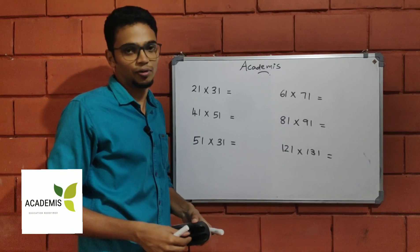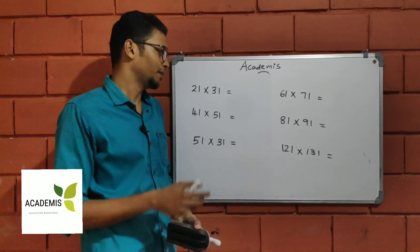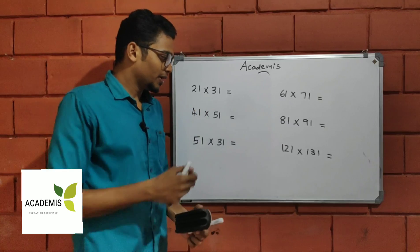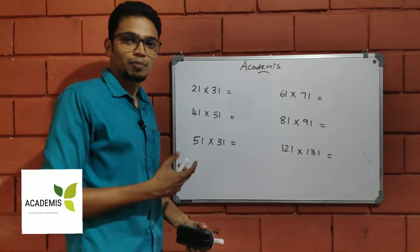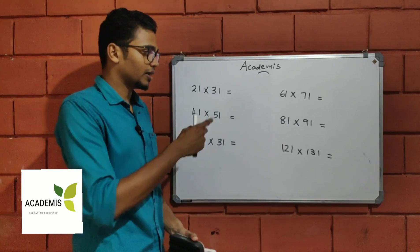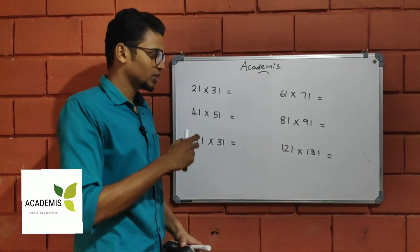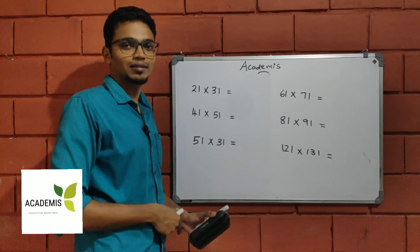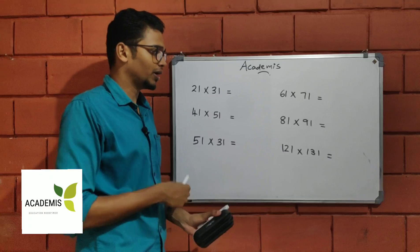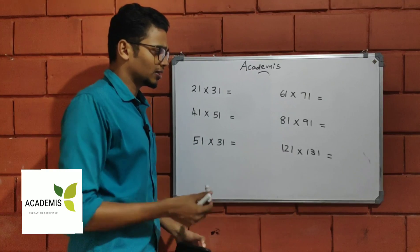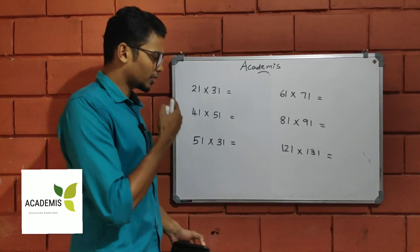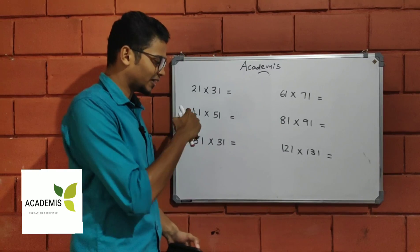I am going to multiply 6 numbers here. We have already seen a special case. What kind of special case? You can't understand the details. I am going to say this.